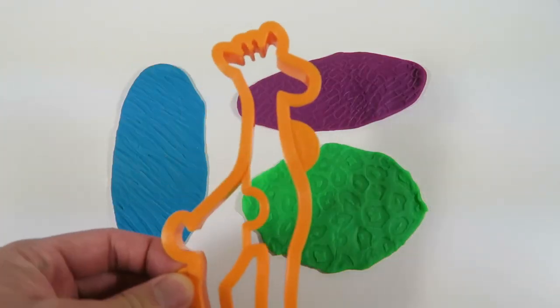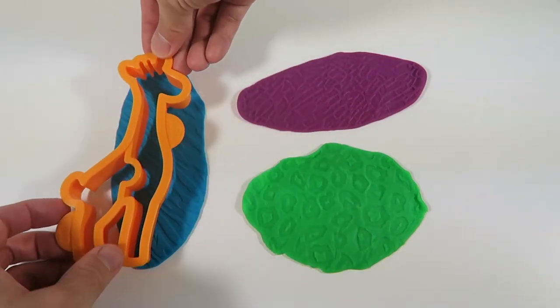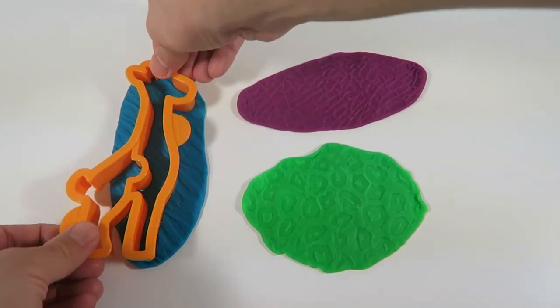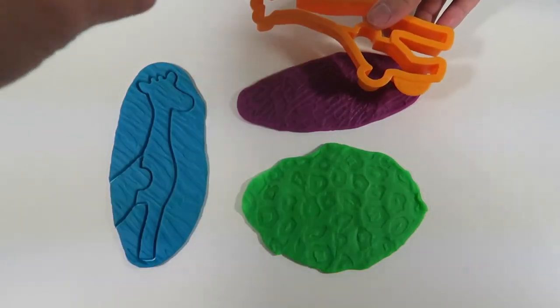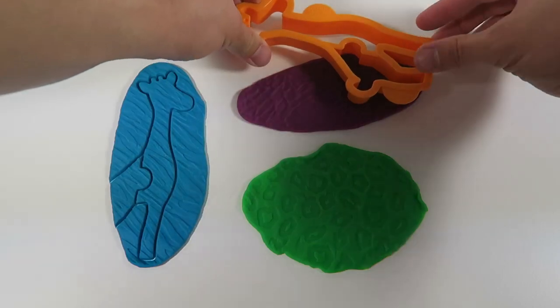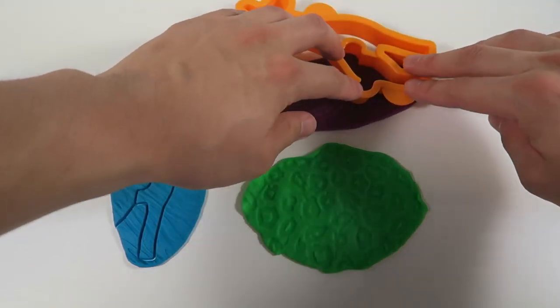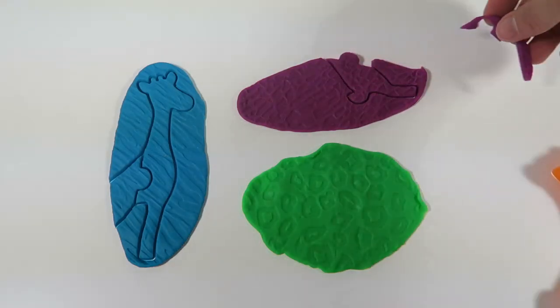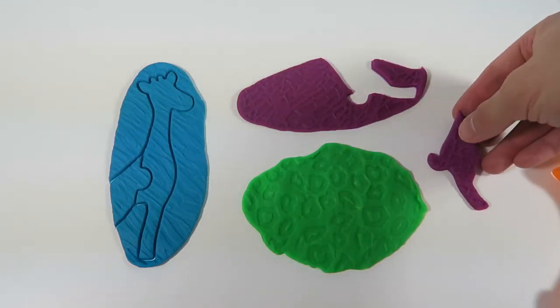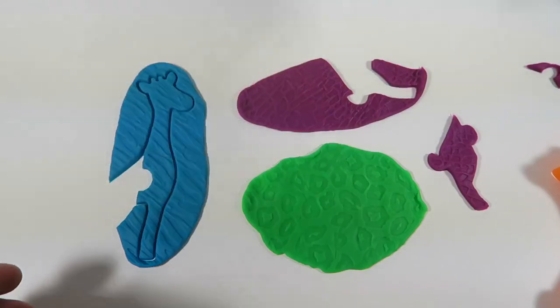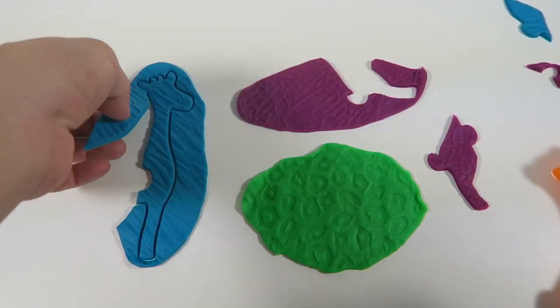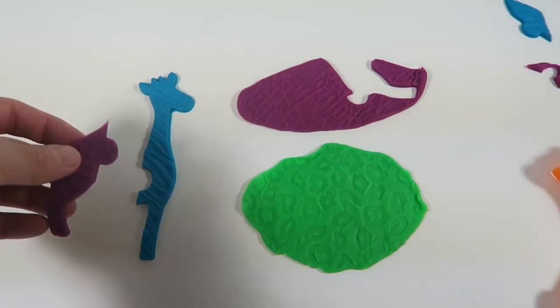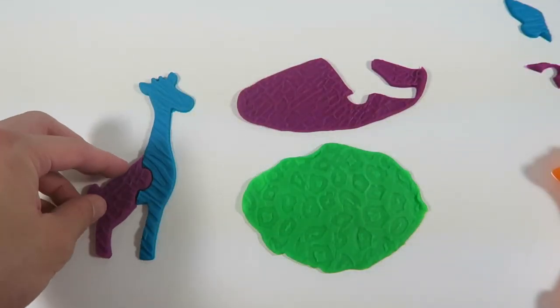Let's make a giraffe. First, I'm going to use some of the blue Play-Doh that I rolled out and some of the purple Play-Doh. Press down. And the molds cut out different pieces for the animal shapes. Put the two pieces together, and now you have a giraffe.